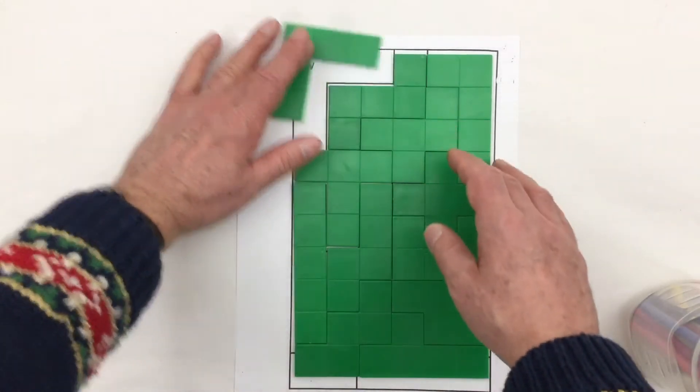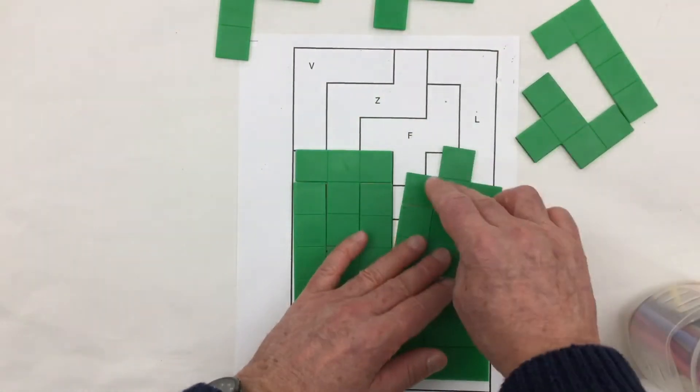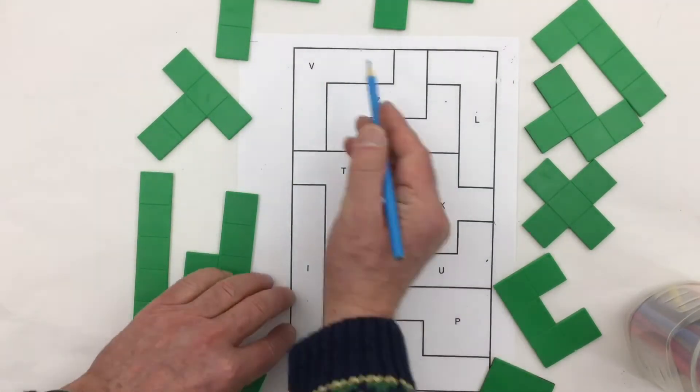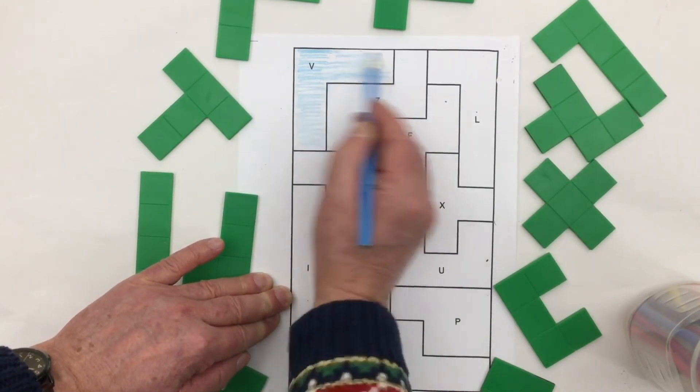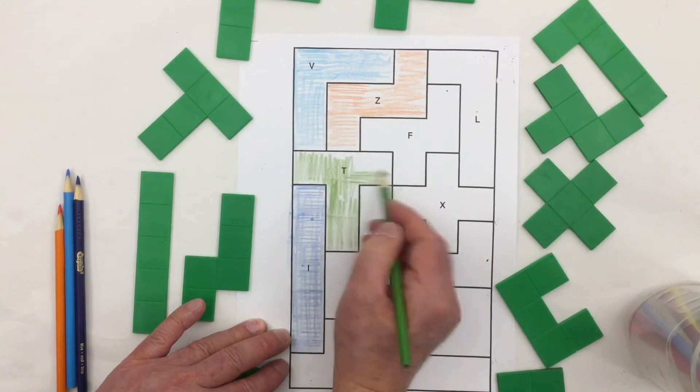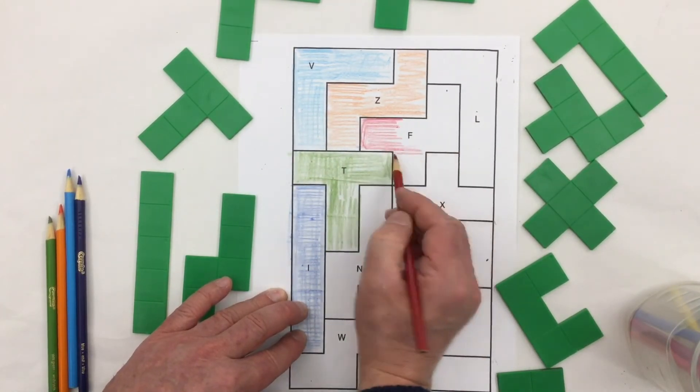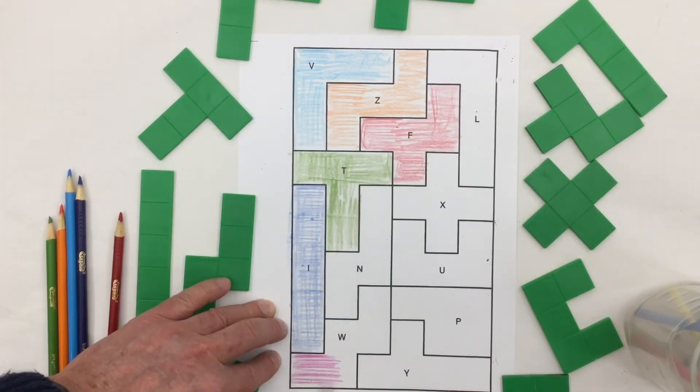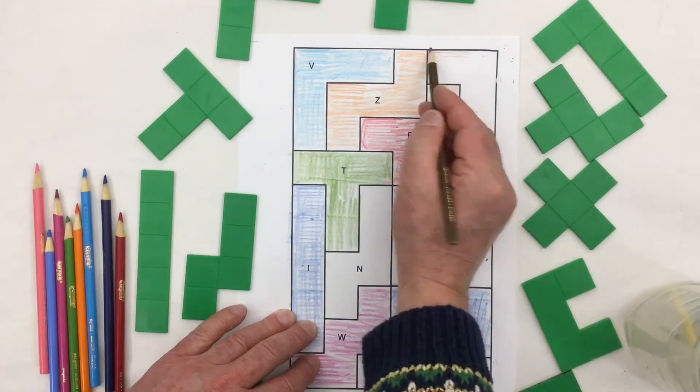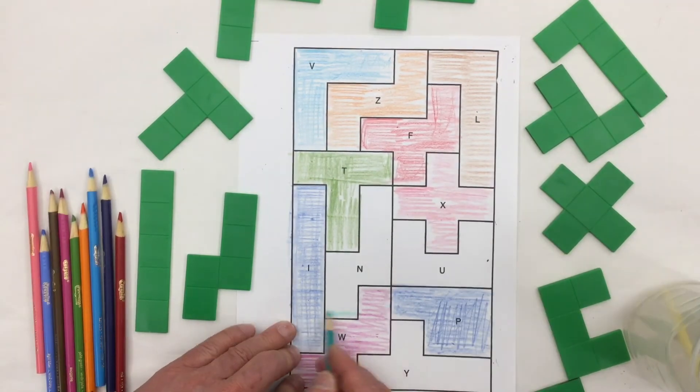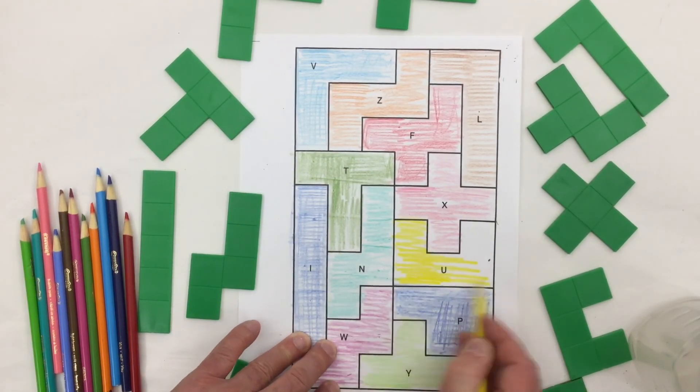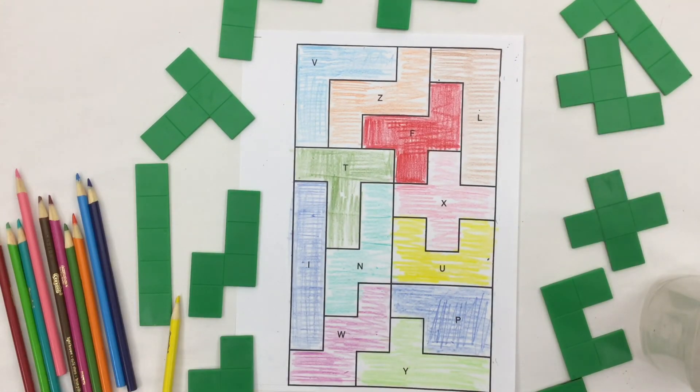What we can do is add some color to our pieces so let's just pull that apart. And let's color it in. And there it is. Here's our 12 pentomino pieces.